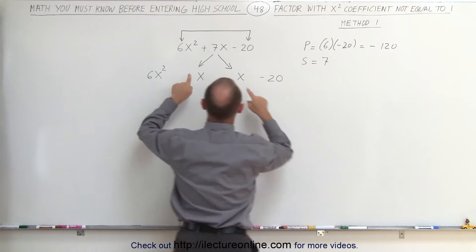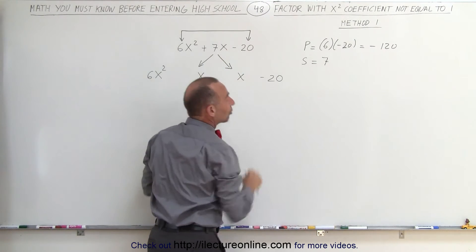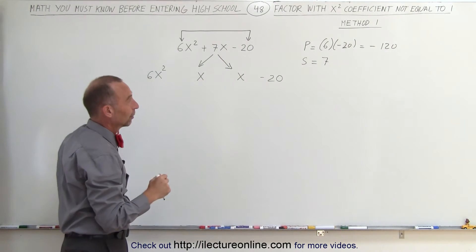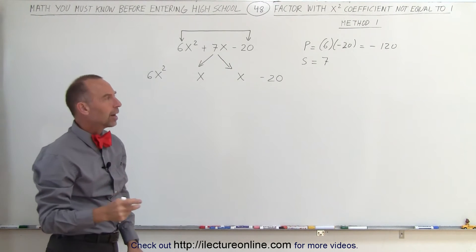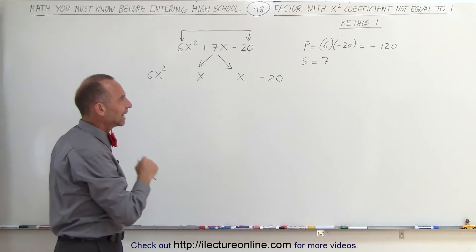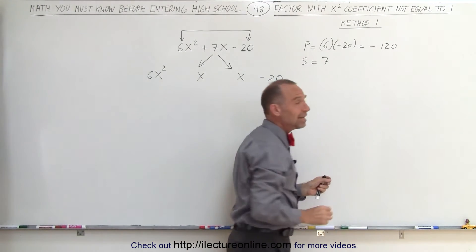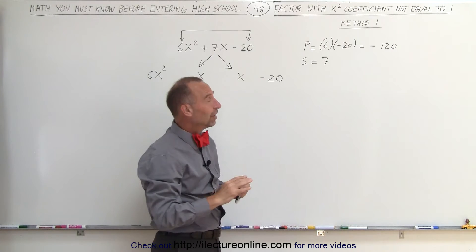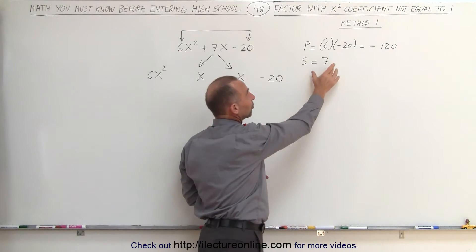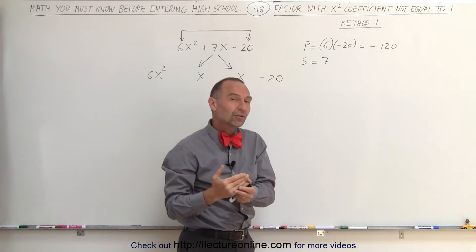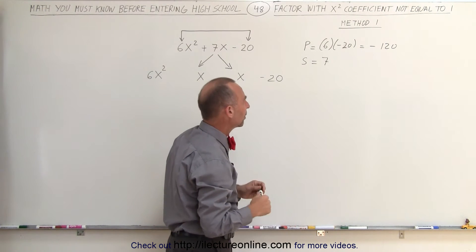When you make these two numbers and add them together, you should get back the original middle term. So you're looking for two numbers whose sum is 7 and whose product is negative 120. The fact that the product is negative means one number must be positive and one must be negative. And since the sum is positive 7, the positive number must be bigger than the negative number.